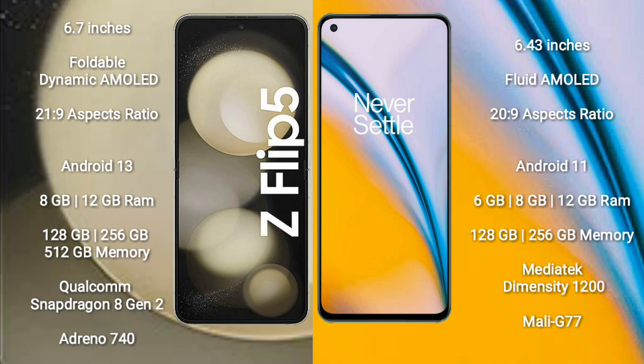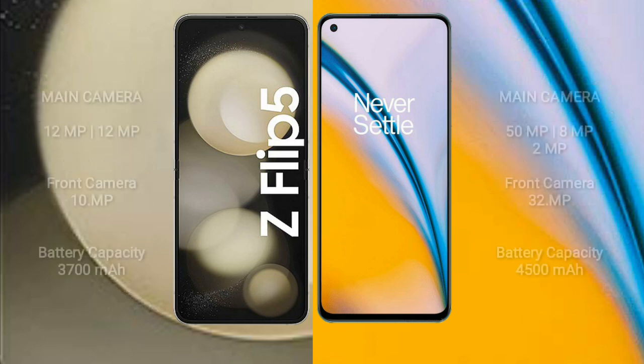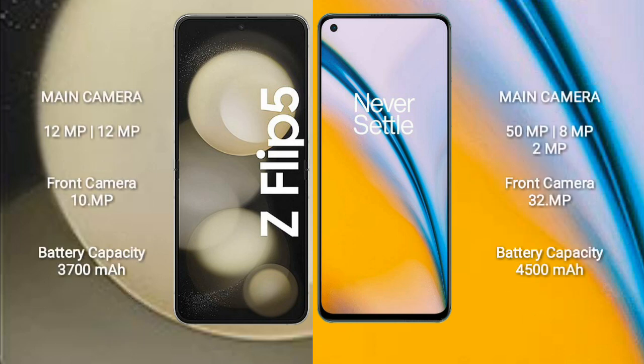OnePlus Nord 2 comes with 6GB, 8GB, or 12GB RAM and 128GB, 256GB, or 512GB internal storage, powered by a MediaTek Dimensity 1200 processor and Mali-G77 GPU.